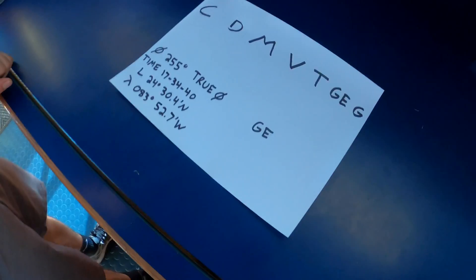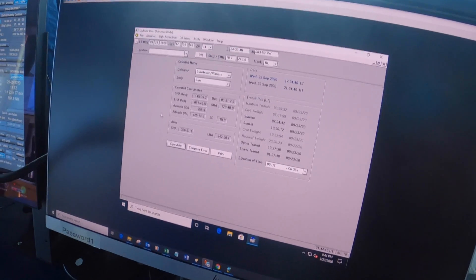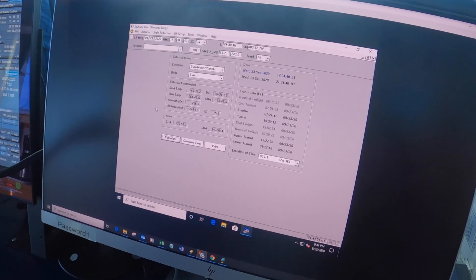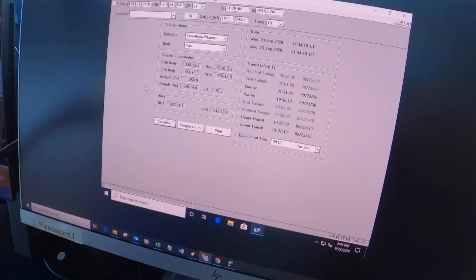Then we're going to take this over to our Skymate computer program. This is a program that uses the nautical almanac, and by plugging in a bunch of numbers, it'll give you what the actual azimuth of the sun and other celestial bodies are based on the time and position.